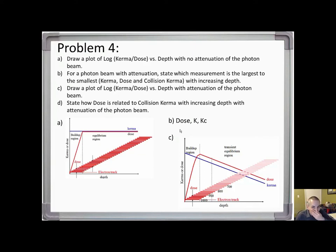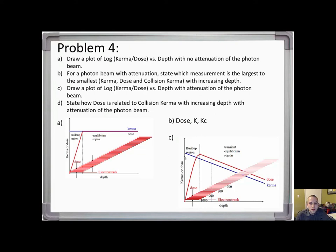Looking back at part B, with attenuation the order from largest to smallest is: dose, kerma, and collision kerma — just slightly under kerma — because kerma equals collision kerma plus radiative kerma. Collision kerma runs parallel to kerma.